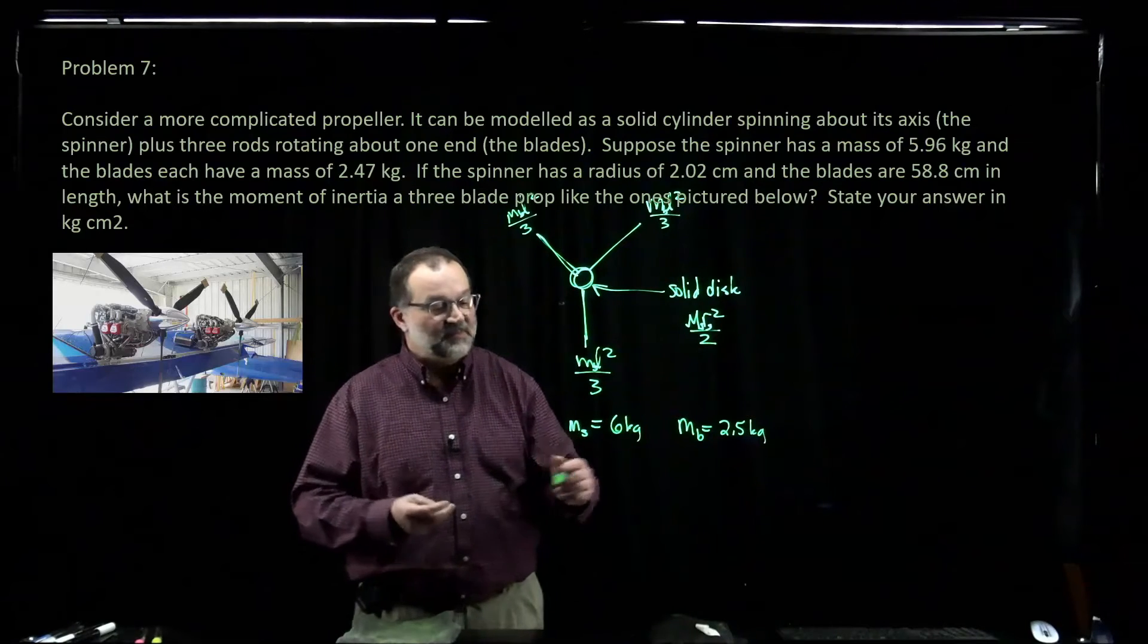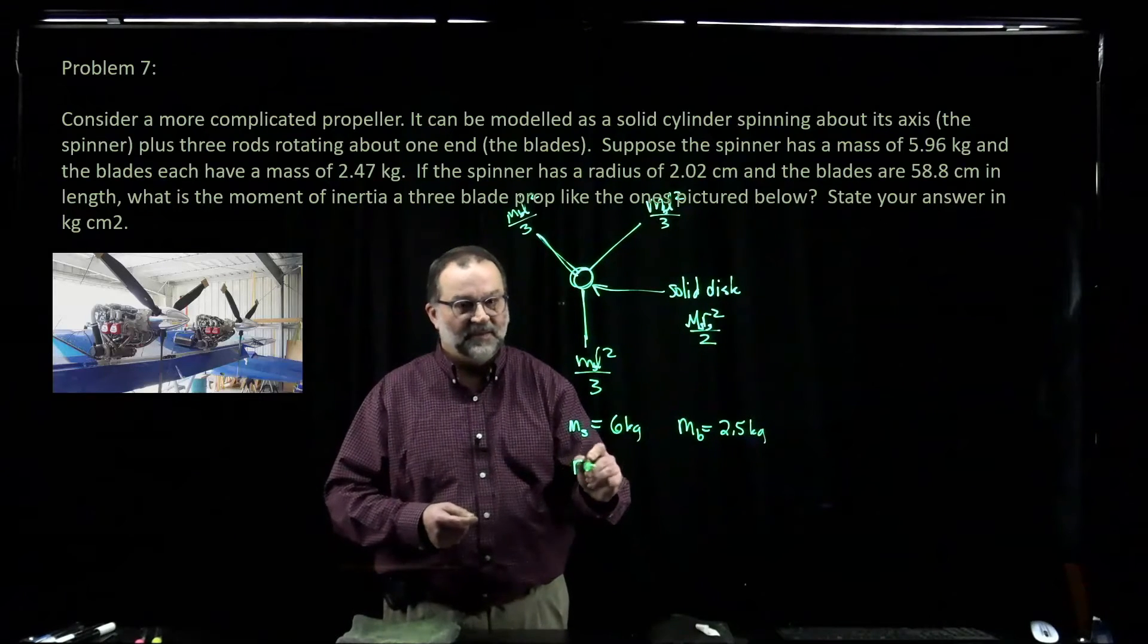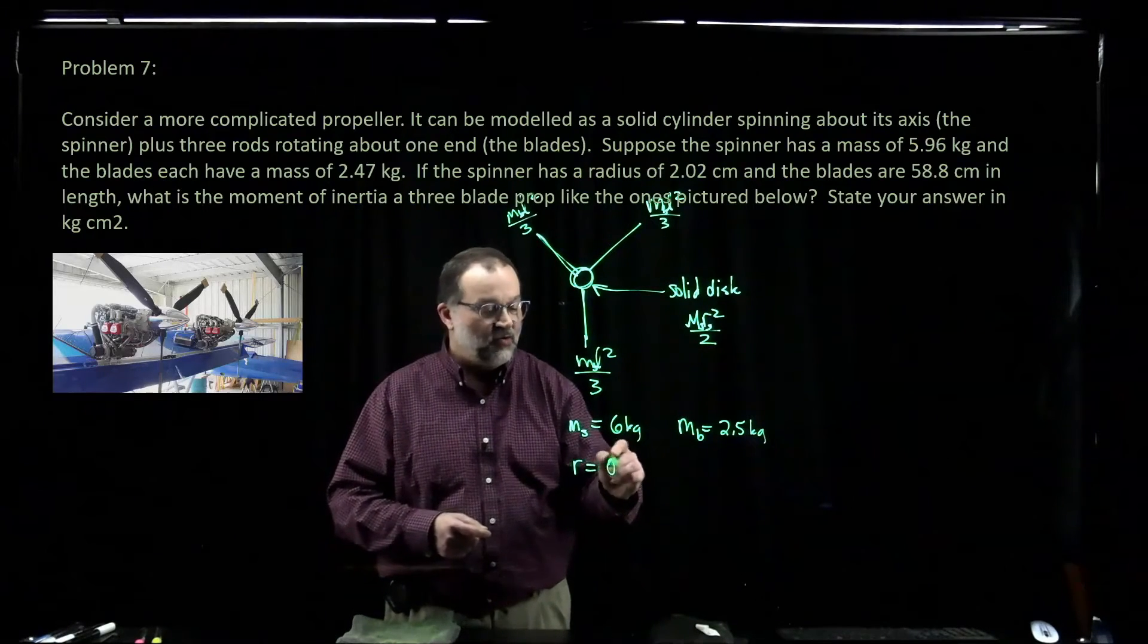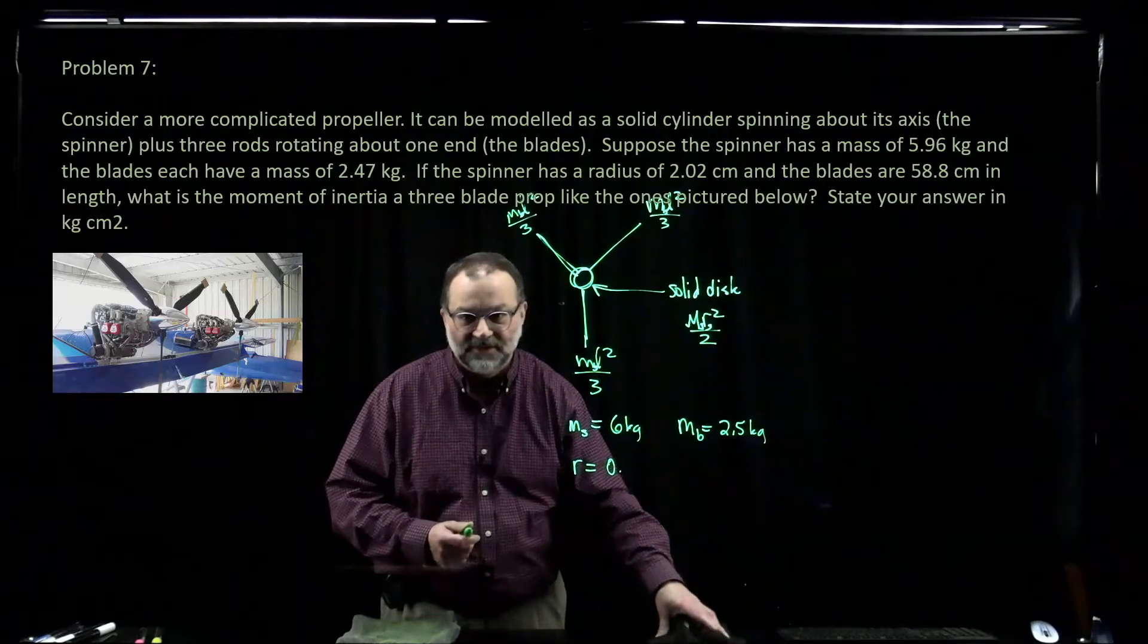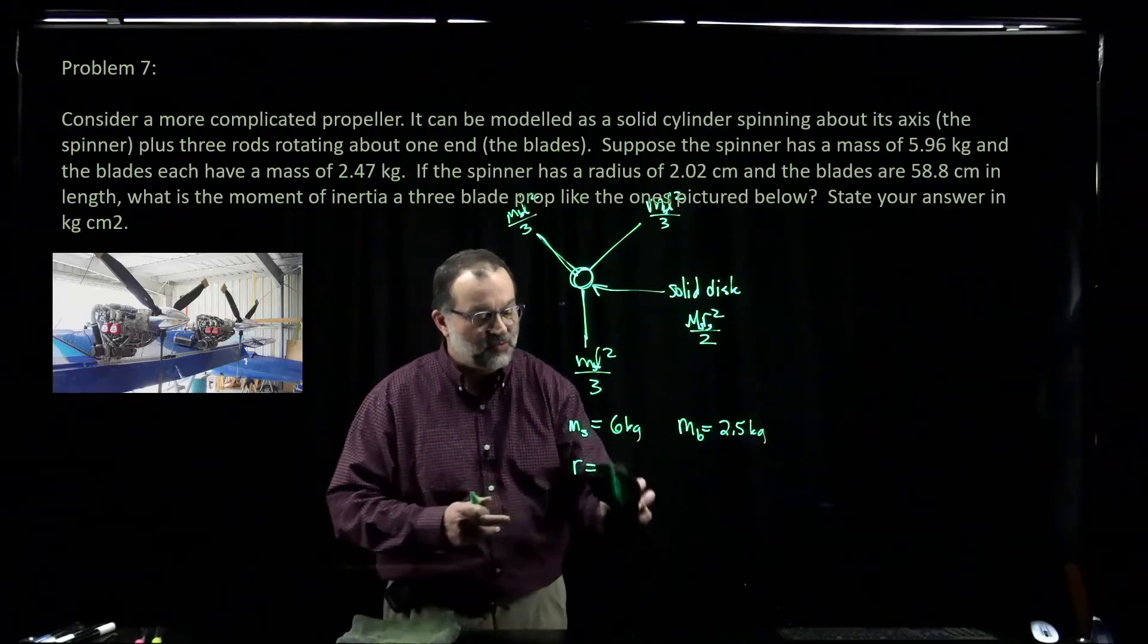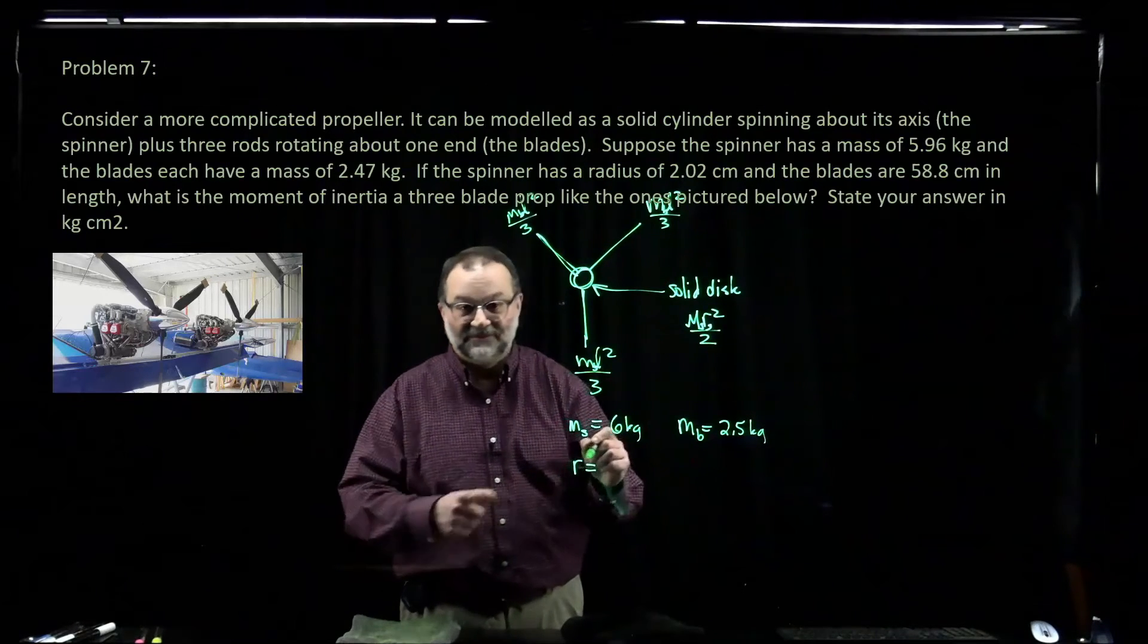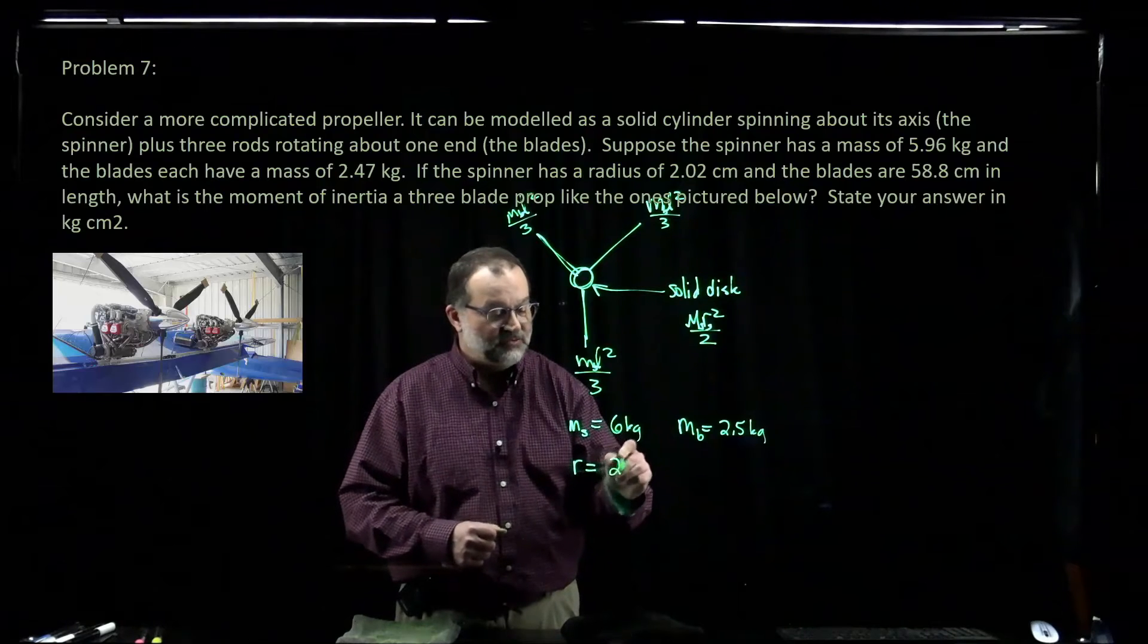The radius of the spinner, r is just 0.0, no, we want this in kilograms centimeter squared. So I'm going to leave this in centimeters. This is two centimeters.